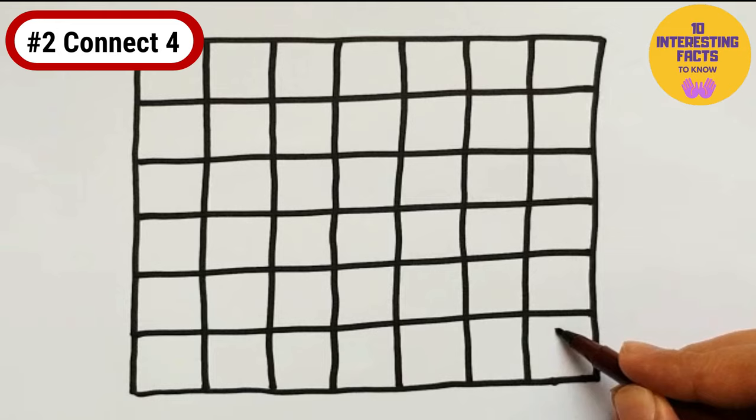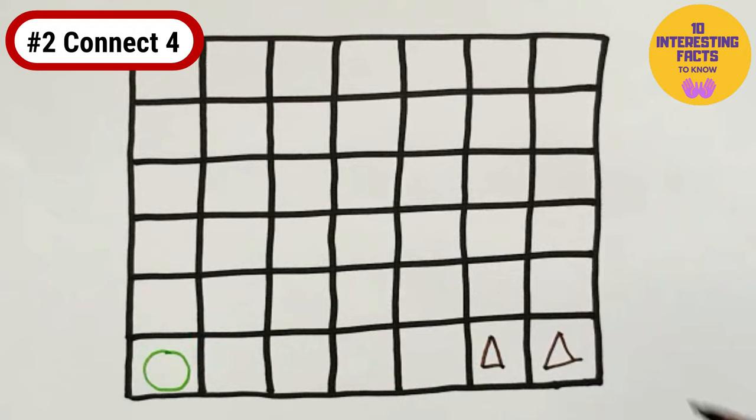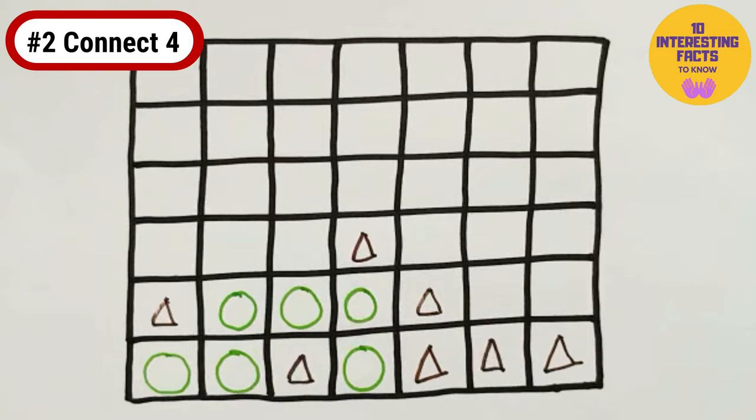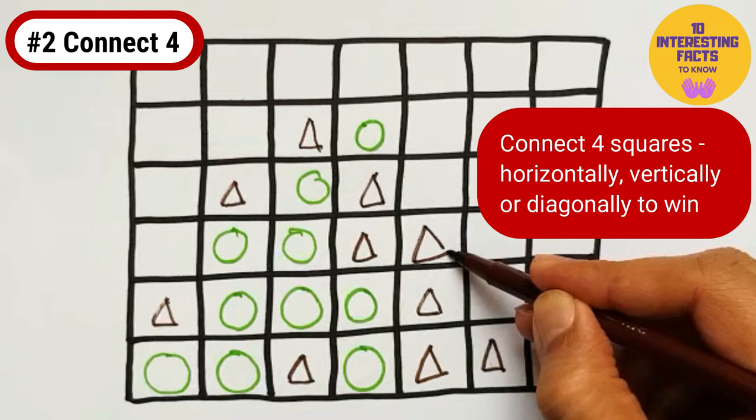Then players can choose different symbols to mark their squares. Player 1 has chosen a triangle and player 2 has chosen a circle. You can only mark your square on top of another marked square or on the bottom row. The first one to connect four squares horizontally, vertically, or diagonally wins. Hey! Player 1 wins!